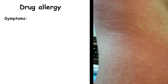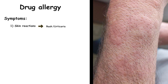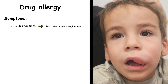The most common symptom of drug allergy is skin reactions, which can be a rash that is red and itchy, hives or urticaria — itchy raised welts on the skin — and sometimes angioedema, which is swelling under the skin, especially around the eyes, lips, and face.